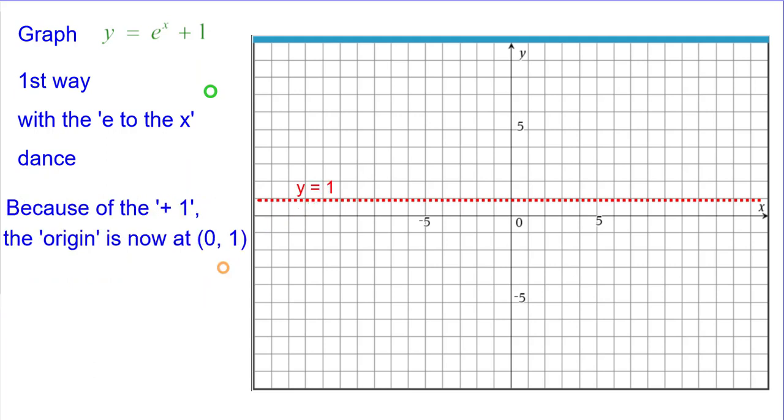And because of the plus 1, the origin will now be moved up to 0, 1 and we'll plot that in orange. We'll call this the new origin and points will be plotted relative to this new origin.